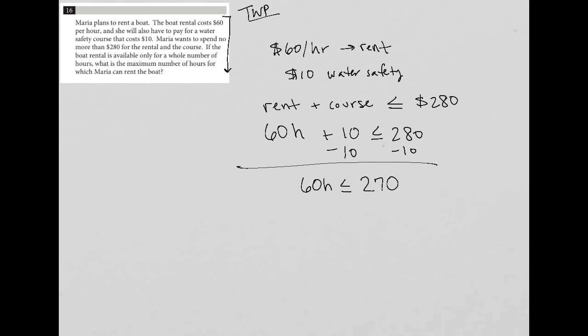Now, if she can only rent it for a whole number of hours, I can divide both sides by 60. And I don't have a calculator at my disposal because this is the non-calculator section. I'm going to go over here and say, well, how many times is 60 going to 270? So 60 into 270, well, that's going to be four times because 60 times four is 240.